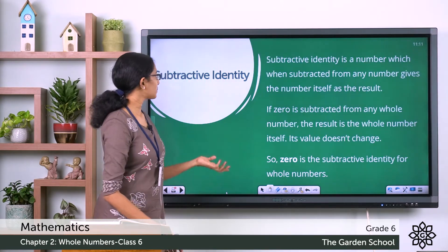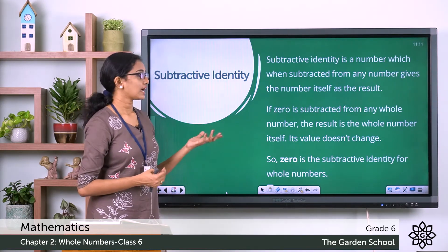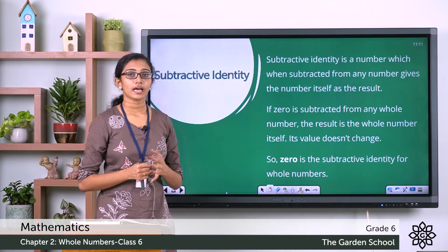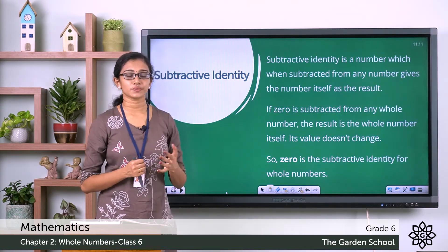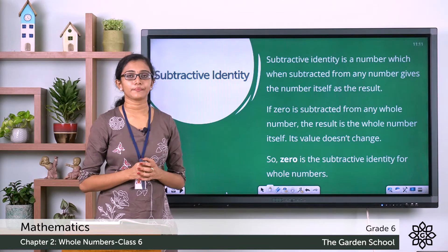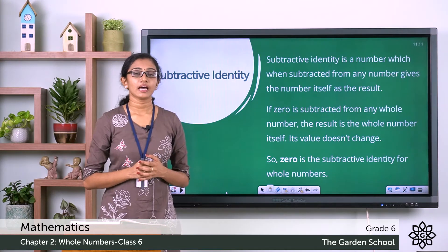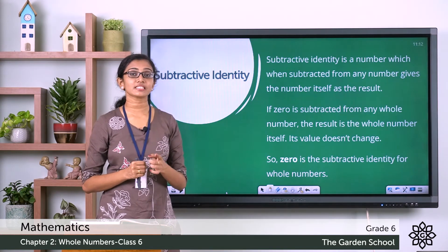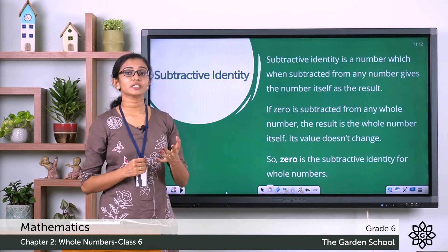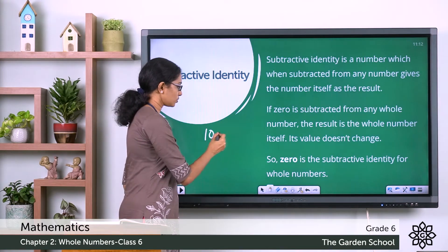Now what about subtractive identity? In this case, there is a number which can be subtracted from any whole number and you get that whole number itself as the result — the identity or value remains the same. The number that can be subtracted without changing the value is 0. You can subtract 0 from any number and the difference will be that number itself. For example, subtracting 0 from 1000 — the value remains the same.